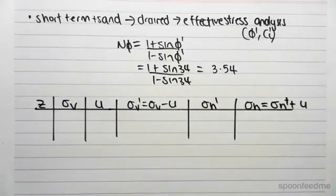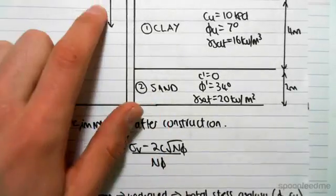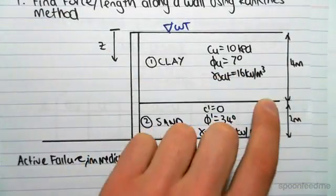So once again we know that we need to look at the top and bottom of our layer always. So in terms of z, the top of our layer would be four meters down.